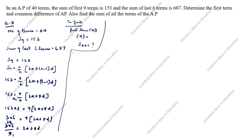Simplifying, we get 34 = 2a + 8d, or 2a + 8d = 34. This is the first equation.